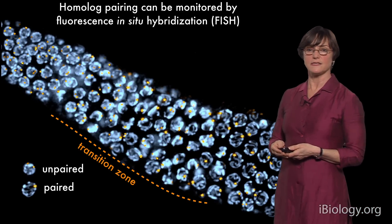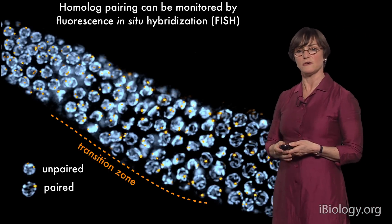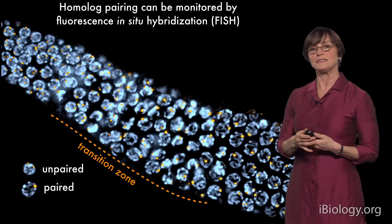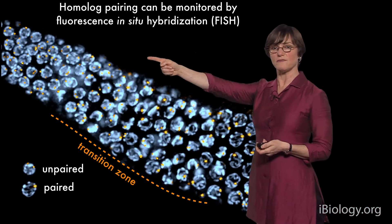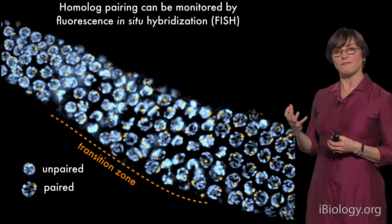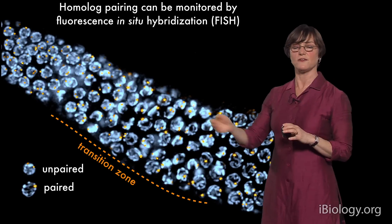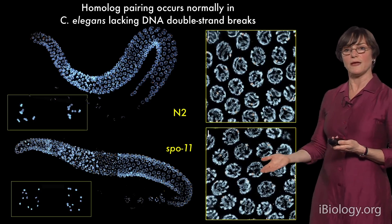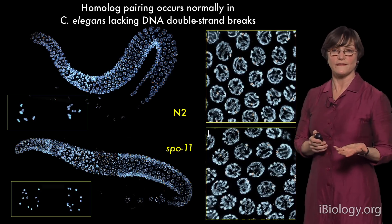We wanted to know if SPO11 was also required for pairing and synapsis. We can monitor that using in-situ hybridization: a probe hybridizing to a particular locus shows two spots when chromosomes haven't paired, and one spot in pachytene when they've fully synapsed. We could tell right away that chromosomes had no difficulty pairing and synapsing in the absence of SPO11, suggesting things were different from budding yeast.